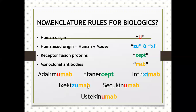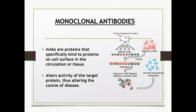For example, cetuximab is of mouse and human origin and is a monoclonal antibody. Secukinumab, which is the most commonly used biologic nowadays, is of human origin and is a monoclonal antibody.